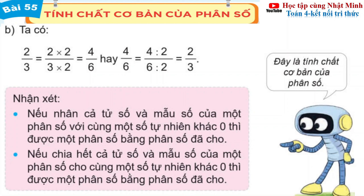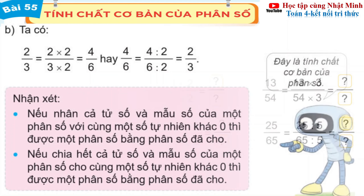Tính chất cơ bản của phân số: Nếu nhân cả tử số và mẫu số của một phân số với cùng một số tự nhiên khác không thì được một phân số bằng phân số đã cho. Nếu chia hết cả tử số và mẫu số của một phân số cho cùng một số tự nhiên khác không thì được một phân số bằng phân số đã cho.